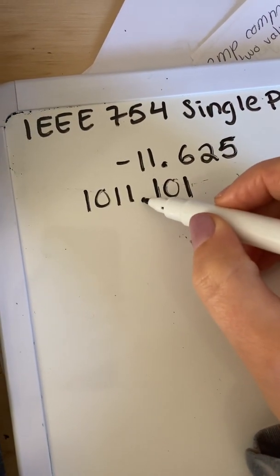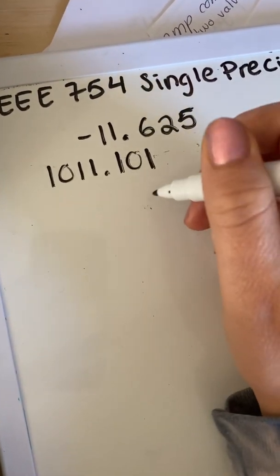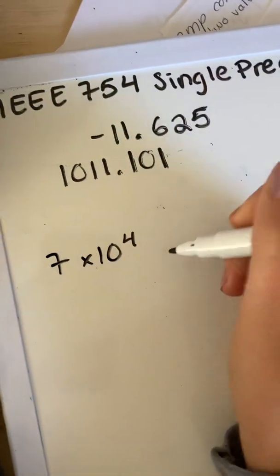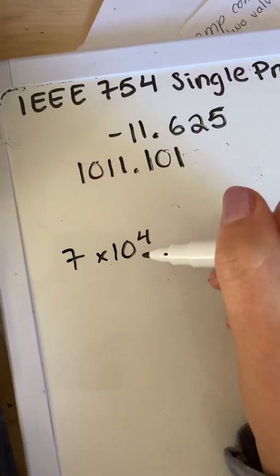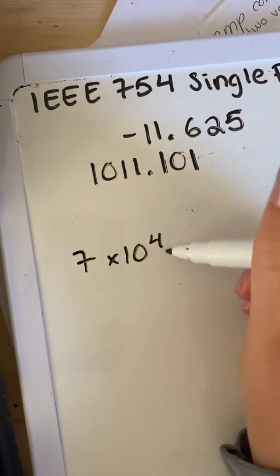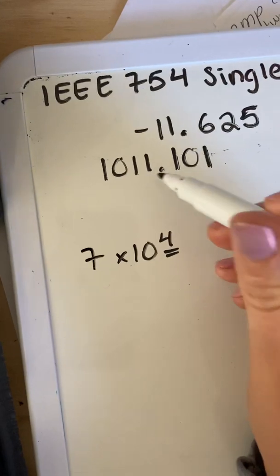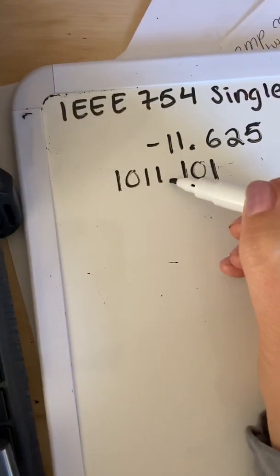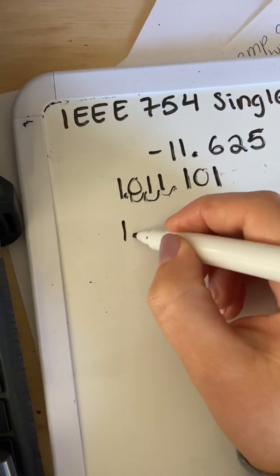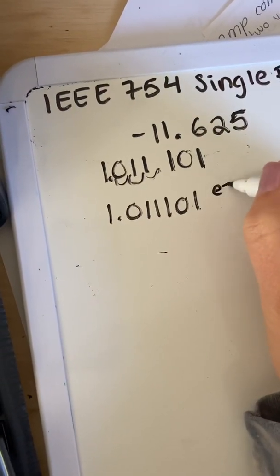And then now we're going to go ahead and find our exponent by moving our decimal place. Now this is how we do it in scientific notation. Like if we had 7 times 10 to the 4, that meant that we moved the decimal place four times. And the reason why it's a 10 is because it was used in the decimal format. So we're going to try to find this exponent when we're moving the decimal here. So we're going to count it. One, two, three. So we end up with our exponent is going to be three.